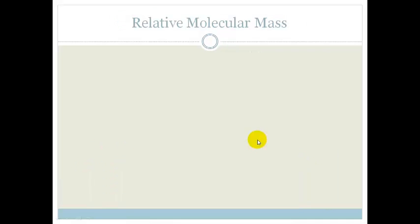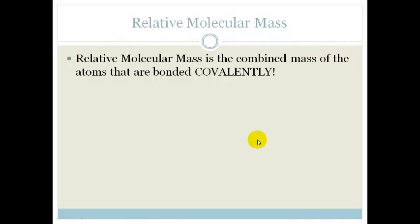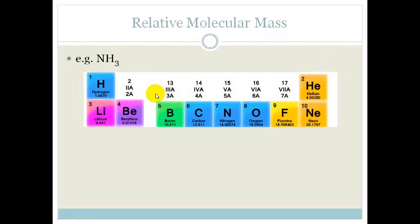So now let's go a little bit further on. Let's talk about relative molecular mass. Relative molecular mass is the combined mass of the atoms that are bonded covalently. So for example ammonia is bonded covalently. So if I had to look for the relative molecular mass of this, we'd look for the mass of nitrogen, which is 14. So it's 14 plus 3 times the mass of hydrogen. So that comes to 17. So relative molecular mass is 14 plus 3, which is 17.